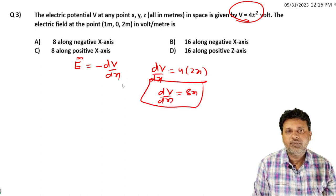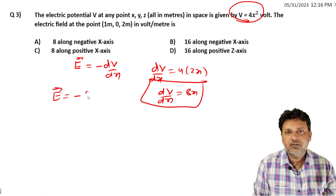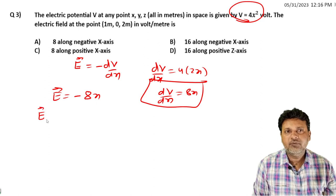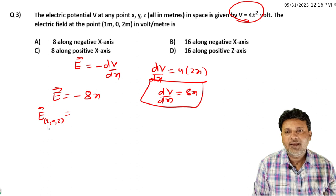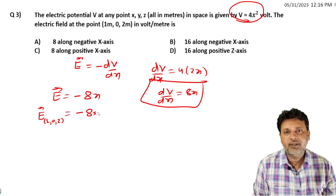Electric field is equal to minus 8X. At which point do we need to find the electric field? At point (1, 0, 2). X comma Y comma Z, X value is 1.